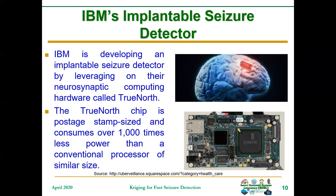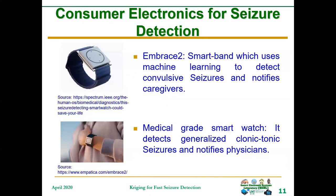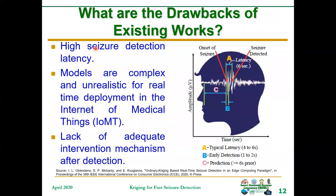This is IBM's implantable seizure detector that makes use of the TrueNorth device — a neurosynaptic device whose size is like a postage stamp, inserted into the brain to detect seizure. This is real hardware and it is very power efficient. There are other consumer electronics devices in the market for seizure detection, like a wristband that senses the conductance level of the skin. During seizure, the conductance level of the skin increases, so once it exceeds a set threshold, the seizure is flagged.